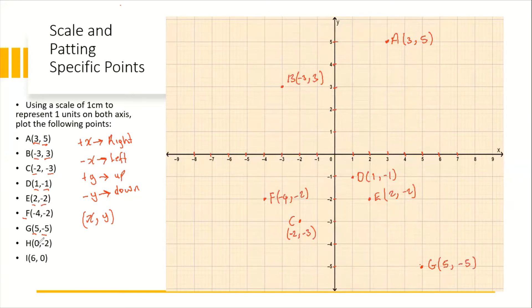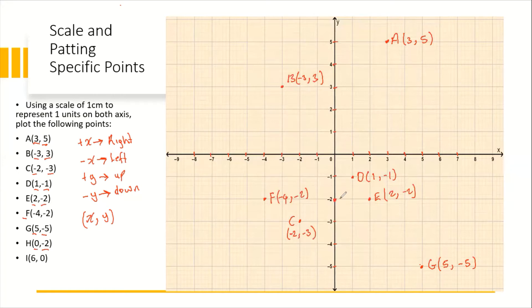For Point H, we have zero on the x and negative two on the y. Starting at the origin, we make zero movements on the x, then two units down: one, two — which takes us right here on the y-axis. This is Point H, with coordinate (0, -2).